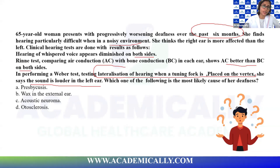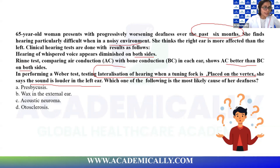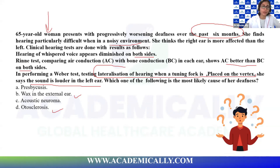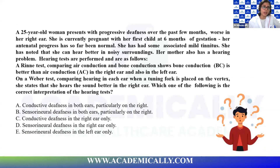This is sensorineural hearing loss because air conduction is greater than bone conduction, which appears normal. Ideally, if it were a normal hearing ear, Weber should be in the midline. Since it is lateralizing, this is a false positive Rinne — confirming sensorineural hearing loss. Wax and otosclerosis cause conductive hearing loss. Both presbycusis and acoustic neuroma can cause sensorineural, but in an elderly female with no acoustic neuroma indicators, presbycusis — an age-related pathology — is the answer.